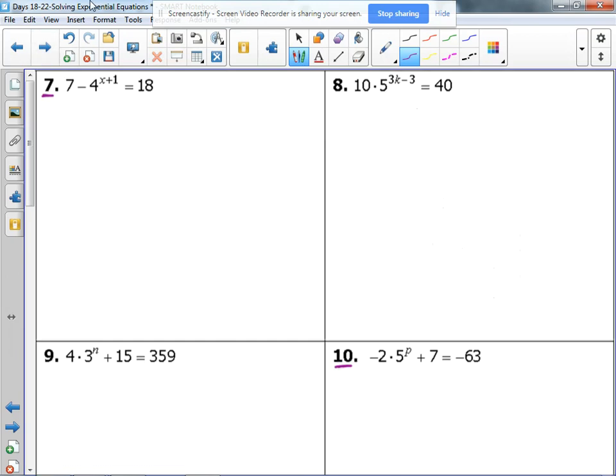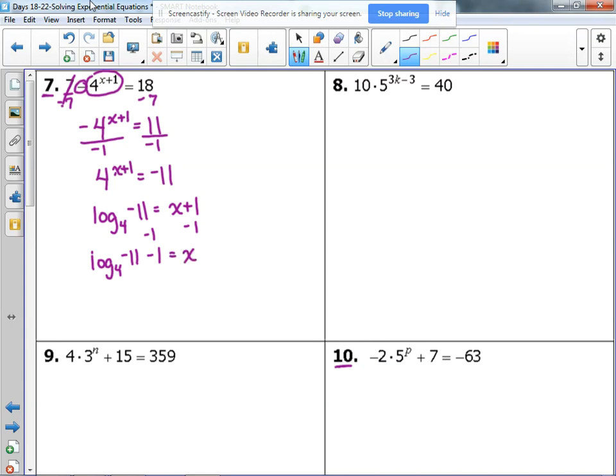Let's look at another example. Let's look at number 7. Here's a case where we do need to isolate the exponential expression because this right here is our exponential expression. It's got two things. It's got this 7 and it has a minus in front of it. So, let's begin by subtracting the 7 from both sides because 7 minus 7 is 0. 18 minus 7 is 11. Now, we've got to get rid of that negative in front. So, we divide both sides by negative 1. Okay. Now, we can put it in log form. Log base 4 of negative 11 is equal to x plus 1. And we will subtract 1 from both sides.